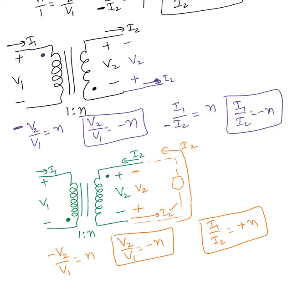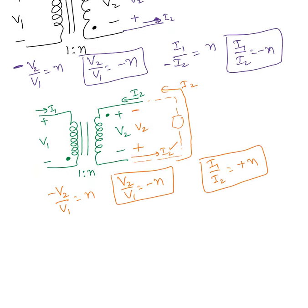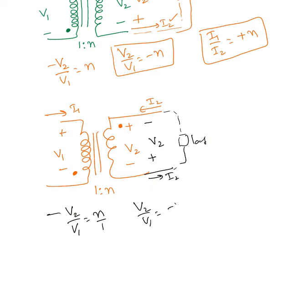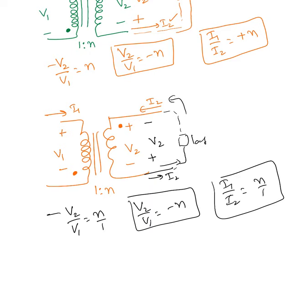In this example, i1 current is leaving the dot, so the dotted terminal must be negative and the opposite must be positive. The new v2 according to dot convention has the opposite sign, so v2 over v1 equals negative n. For the current, i2 is supposed to leave this terminal, and the given direction is also the same, so i1 over i2 equals positive n.